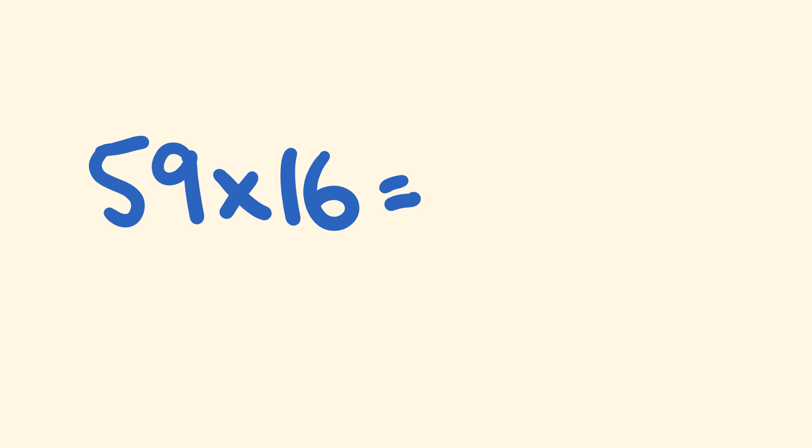We have 59 multiplied by 16. Now, as you can see, 59 is pretty close to 60. In fact, it's equal to 60 minus 1. So what we're going to be working out first is 60 multiplied by 16.